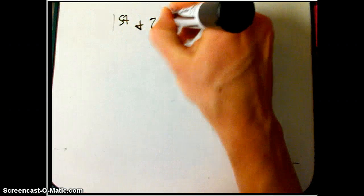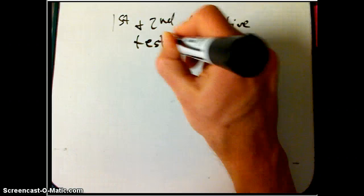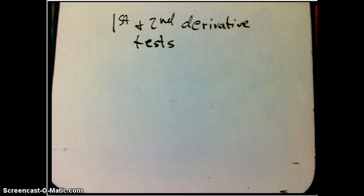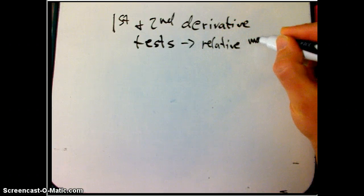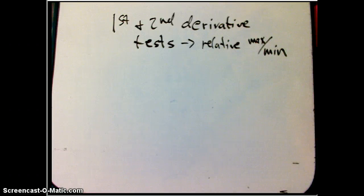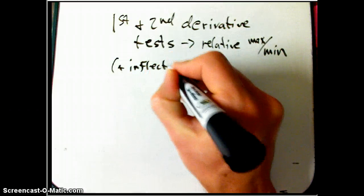Here's a quick overview and then a graphical or sign chart example of using the first and second derivative tests for relative, also called local, maxima and minima. I'm going to mention inflection points as well because if you've got a sign chart for the second derivative, you can find the inflection points as well.